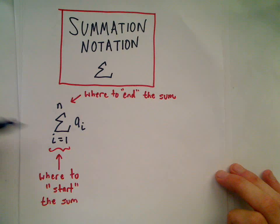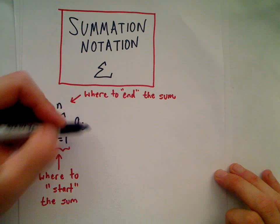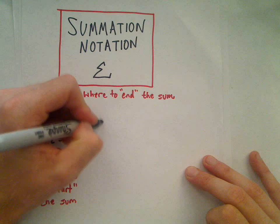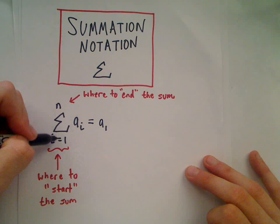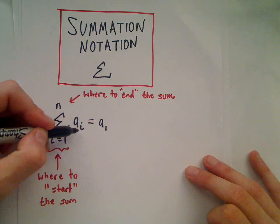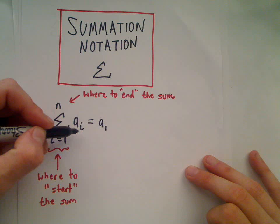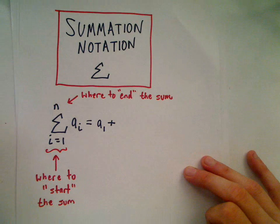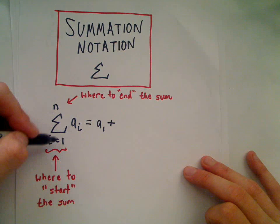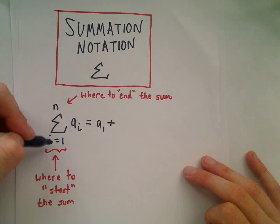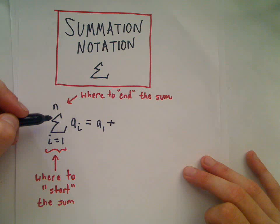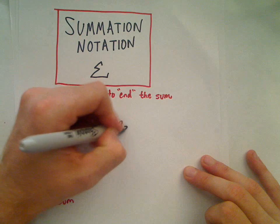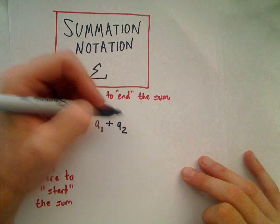So summation notation is a compact way of writing the following sum. The first thing we do - it says i starts at 1, so we replace the i with a 1. And then the summation - they say sum-ation because it has to do with addition. Then the idea is whatever this number is at the bottom, you bump it up by one whole unit. So the next value would be i equals 2.